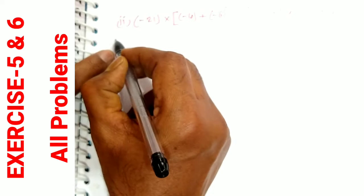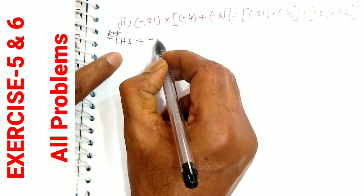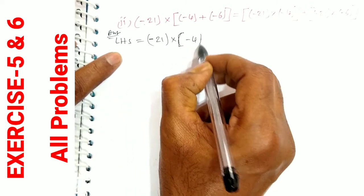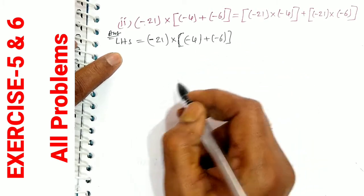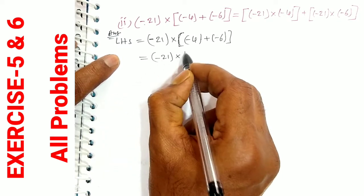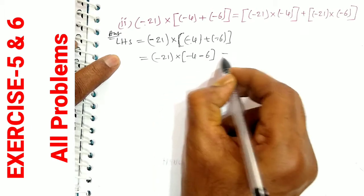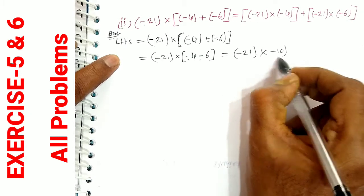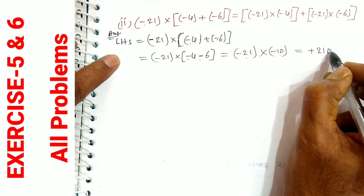Second bit. LHS is equal to minus 21 into minus 4 plus minus 6. This equals minus 21 into minus 4 plus minus 6. So minus 21 into minus 4 minus 6, which is minus 21 into minus 10. Minus into minus is plus, so 21 into 10 equals 210.